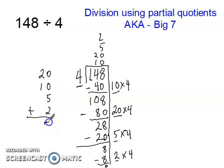5 plus 2 is 7, and then 2 plus 1, 3. So 148 divided by 4 equals 37.